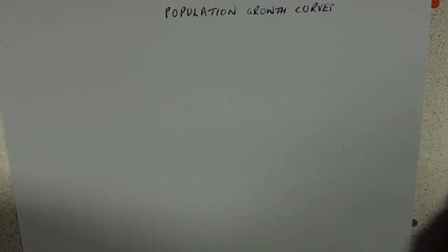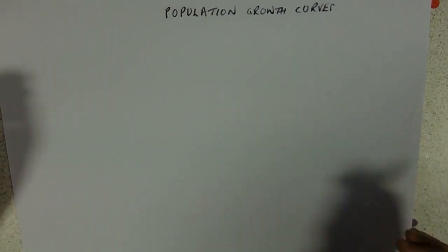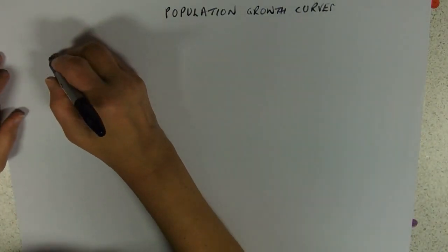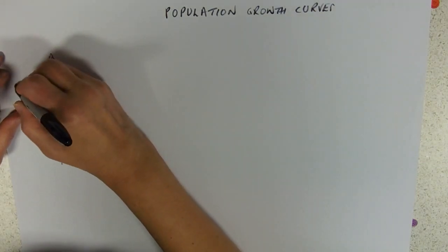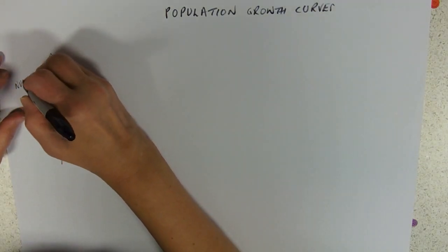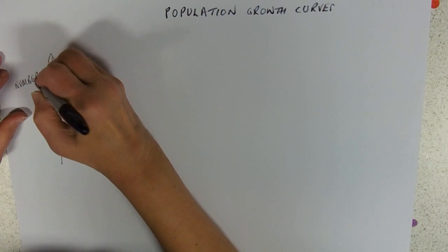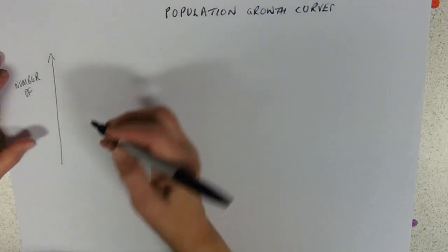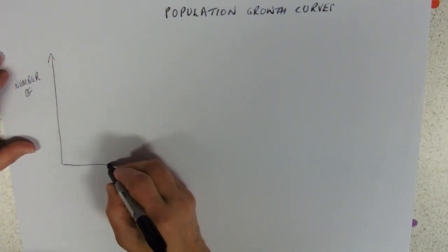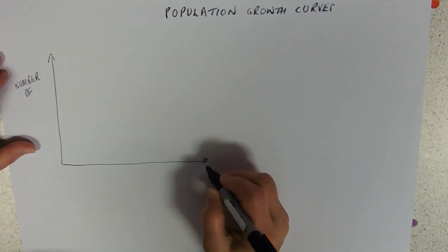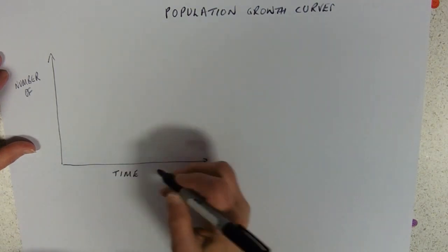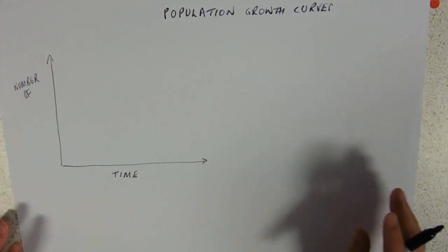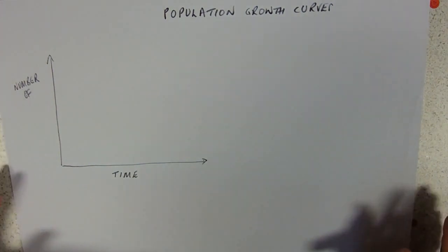Here we go on population growth curves. Population growth curves show the numbers of a population. On the side you've got the number of whatever it is that you're measuring, and across the bottom you've got time. We're going to deal with two scenarios.